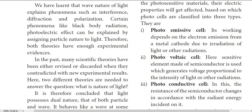The second type is the photovoltaic cell. In this cell, a sensitive element made of semiconductor is used, which generates voltage proportional to the intensity of light or other radiation. When intensity of light increases, the voltage increases.